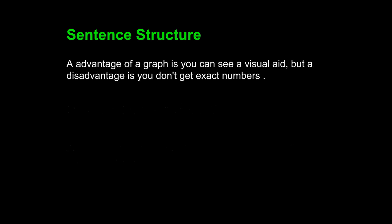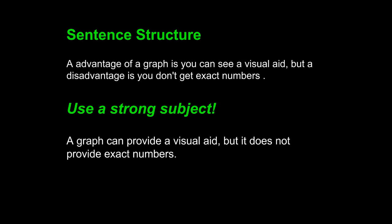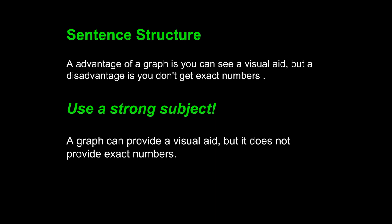Let's try it again. An advantage of a graph is you can see a visual aid, but a disadvantage is you don't get exact numbers. The student has obviously followed a pattern, but unfortunately that pattern is built on a weak subject. We want to use a strong subject, and since the writer wishes to discuss graphs, use 'graph' as the subject of the sentence. A graph can provide a visual aid, but it does not provide exact numbers. We have moved from 'advantage' to 'graph,' clarified the sentence, and it is stronger.